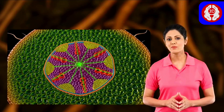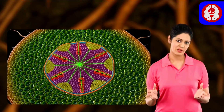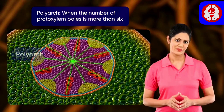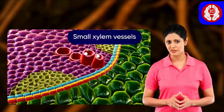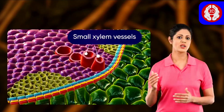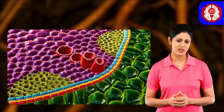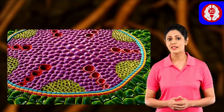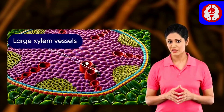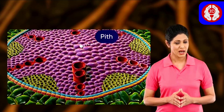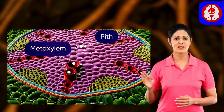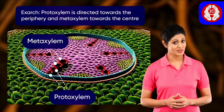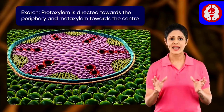Since the xylem bundles are present in large numbers, the condition is called polyarch. The outer small vessels of xylem arranged towards the periphery are called proto-xylem, and the inner larger xylem vessels arranged towards the pith are called the meta-xylem. This condition of xylem is called exarch.